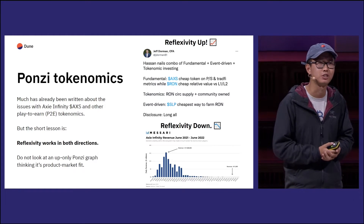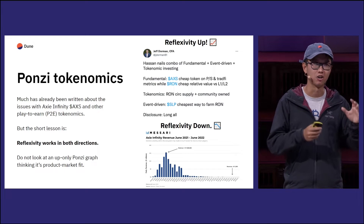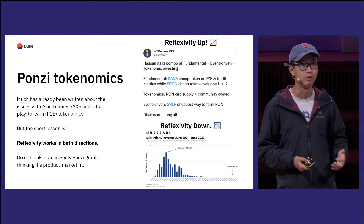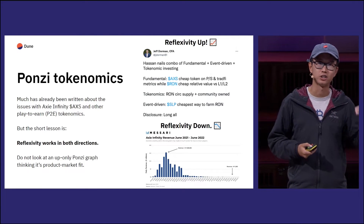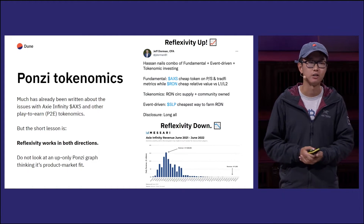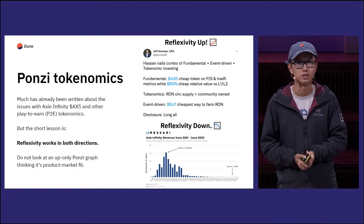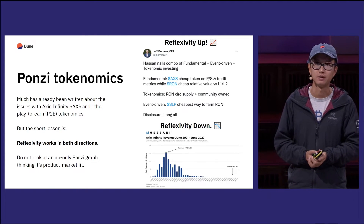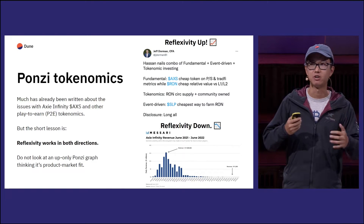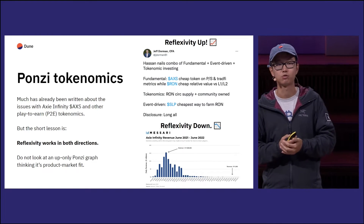Starting with Ponzi tokenomics — that's generally how I feel about Play2Earn in general. It's kind of a Herbalife-esque business model applied to Web 3. The one lesson to learn from this is reflexivity works in both directions. When you're looking at a Ponzi graph, you might be looking at just one half of the graph when everything is going up and to the right. But the circular tokenomics can also spin the other way, and that's when things really start cratering down.